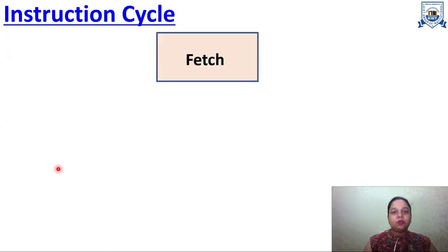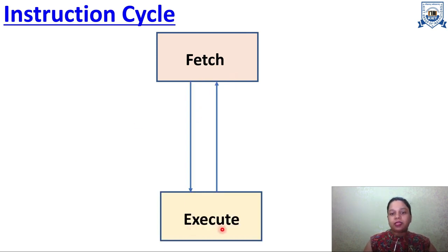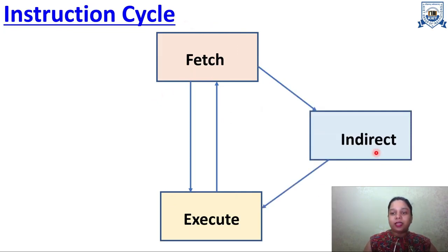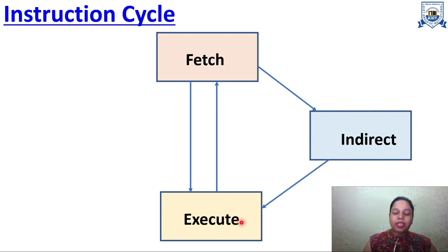Now we will see the instruction cycle. The first step is Fetch — to know what the instruction is. Once you have the instruction, you can simply execute it. If there is a next instruction, fetch that and execute it. This cycle executes all instructions in the program. If there is indirect addressing, the effective address is read first before execution.